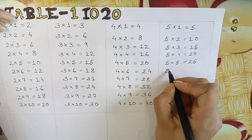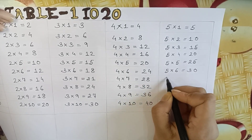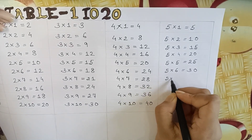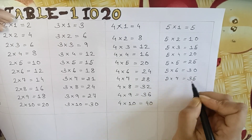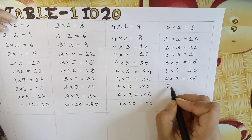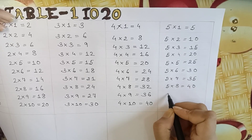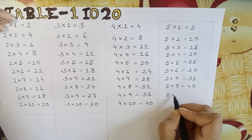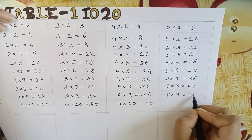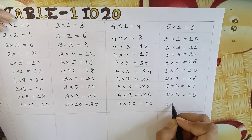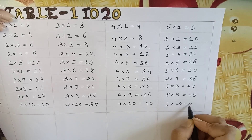5 x 6 is equal to 30. 5 x 7 is equal to 35. 5 x 8 is equal to 40. 5 x 9 is equal to 45. 5 x 10 is equal to 50.